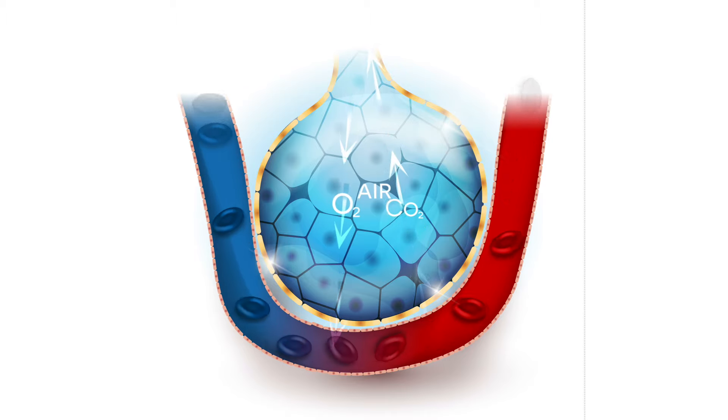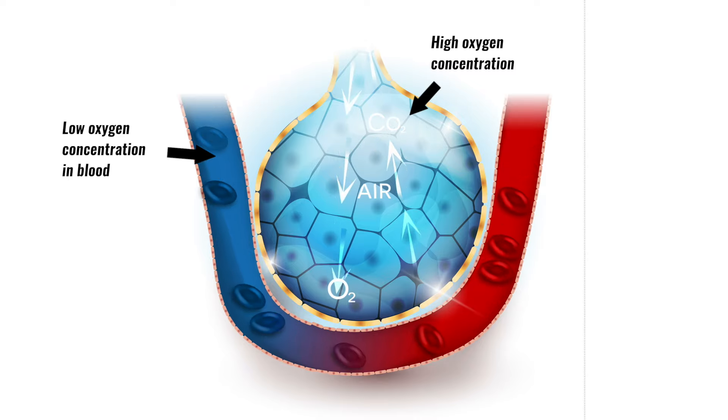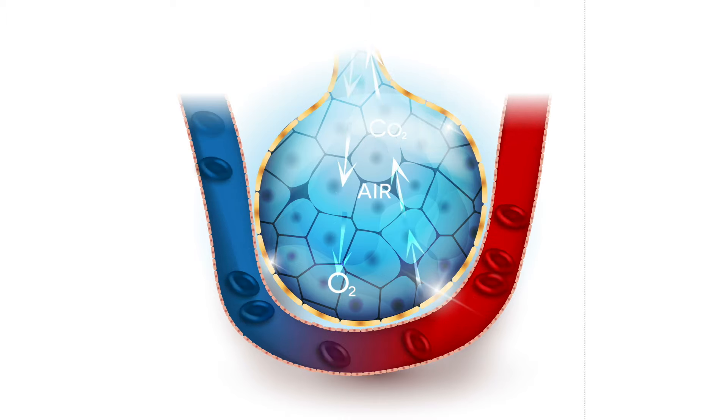This occurs during gaseous exchange because the blood in the capillaries surrounding the alveoli has a lower concentration of oxygen than the air in the alveoli which has just been inhaled. Because both alveoli and capillaries have walls which are only one cell thick, this allows gases to easily diffuse from one to the other.